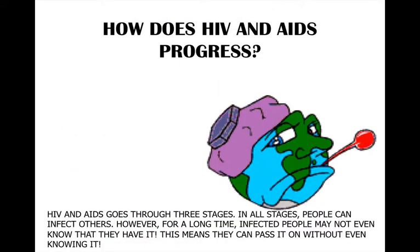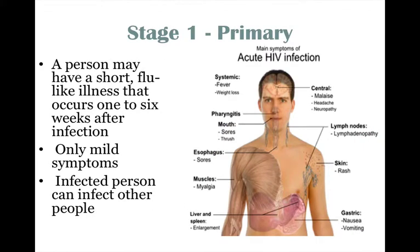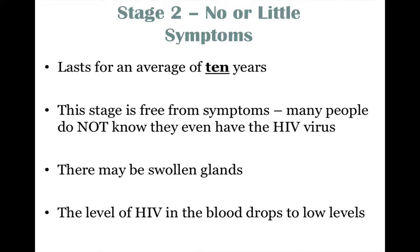How does HIV and AIDS progress? HIV and AIDS go through three stages. In all stages, people can infect others; however, for a long time, infected people may not even know that they have it, meaning they can pass it on without even knowing. Stage 1 — Primary: a person may have a short flu-like illness that occurs one to six weeks after infection, with only mild symptoms, but the infected person can infect other people. Stage 2 — No or little symptoms: Stage 2 lasts for an average of 10 years, is free from symptoms, and many people do not know they have the HIV virus. There may be swollen glands, and the level of HIV in the blood drops to low levels.